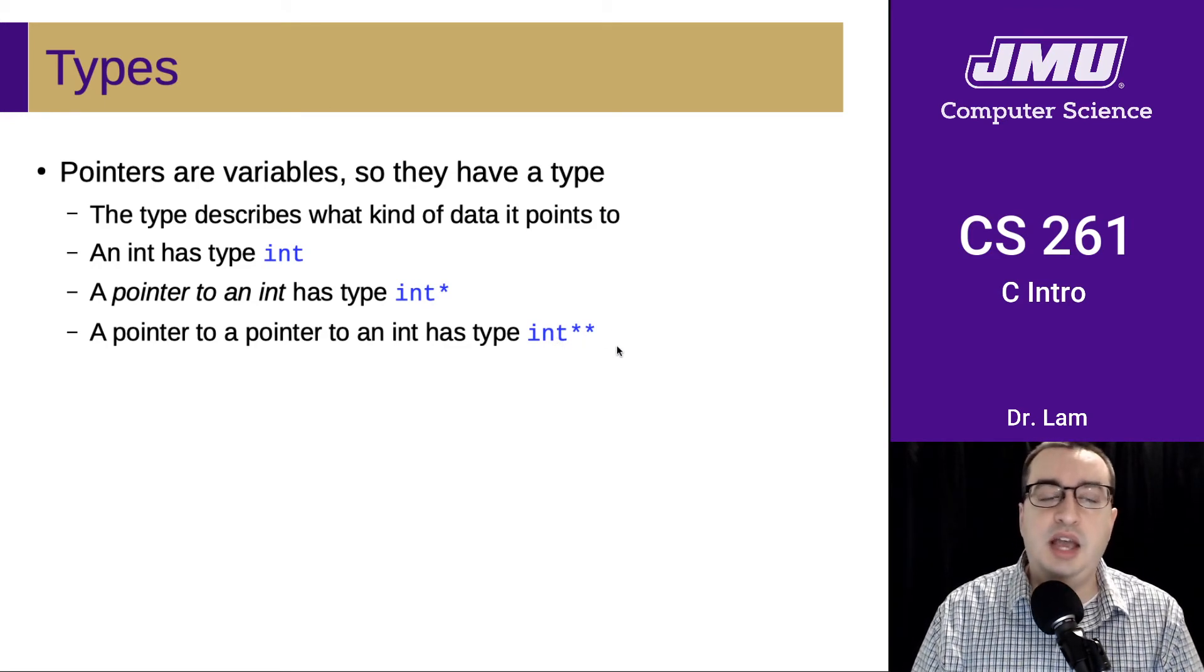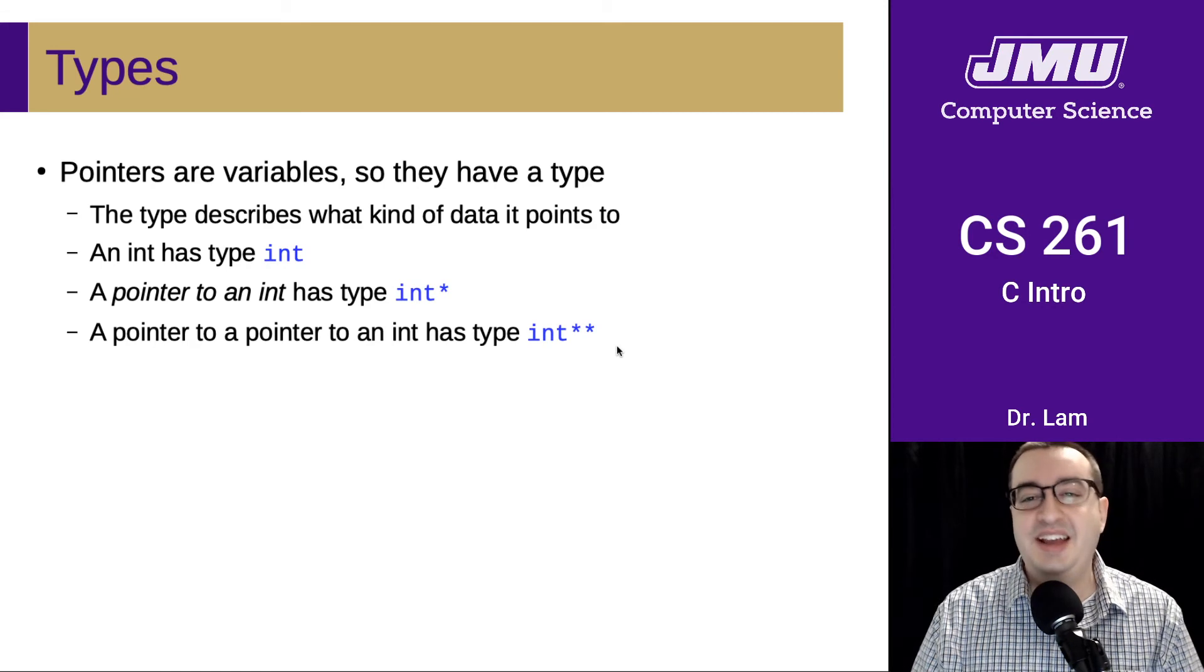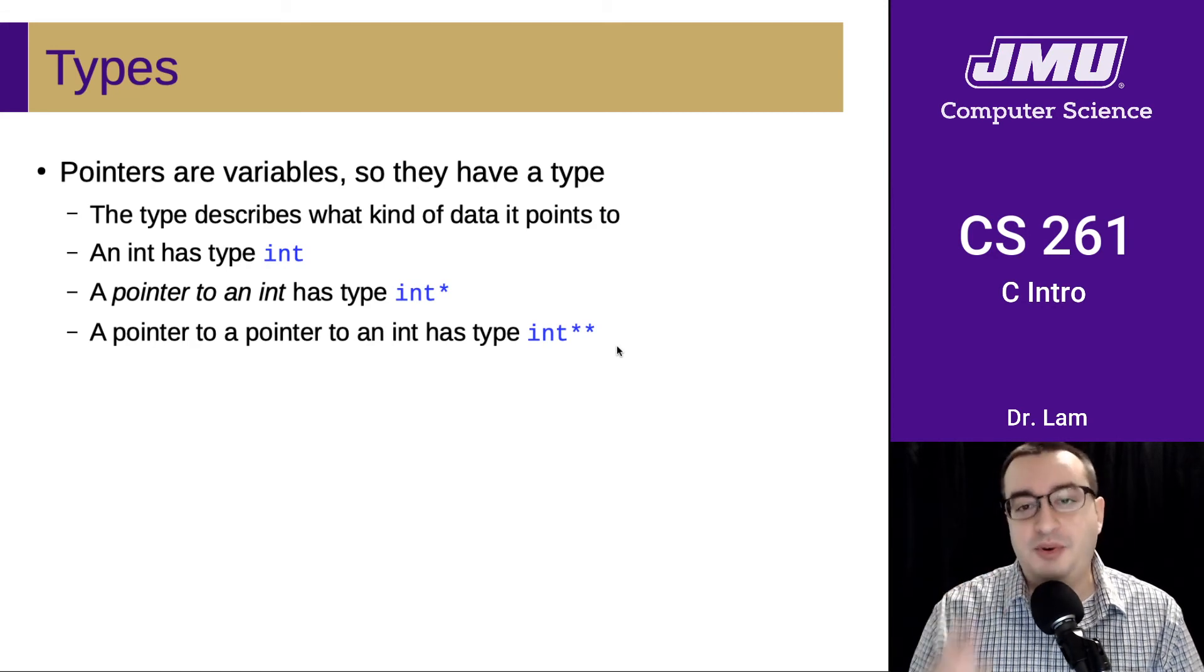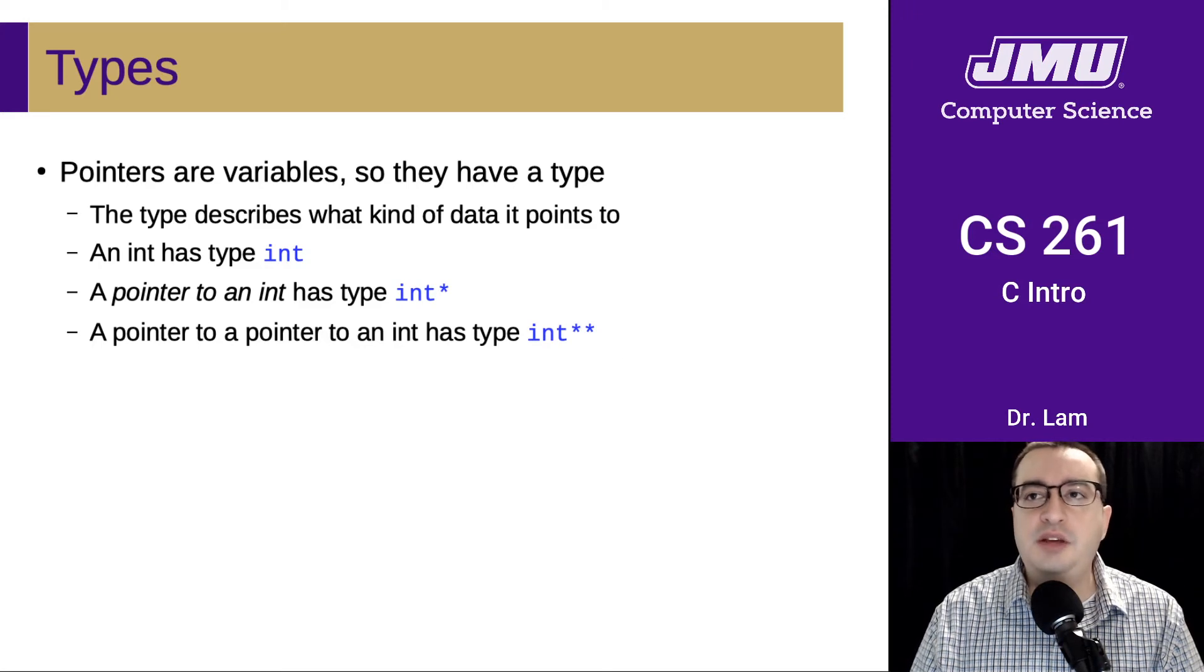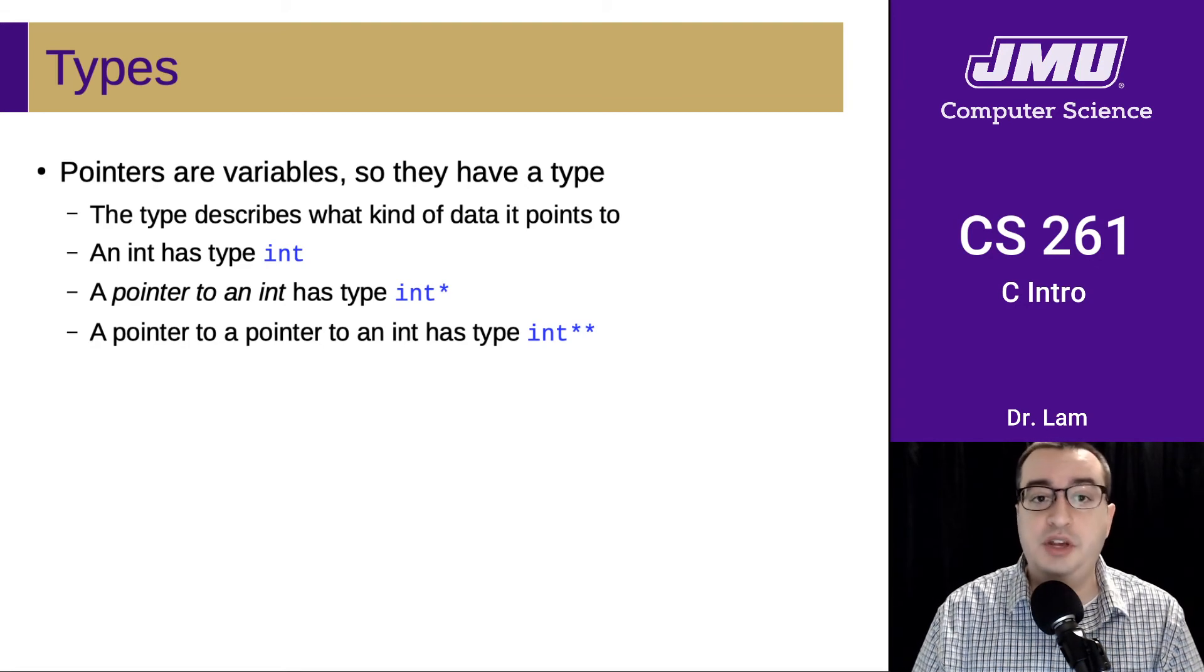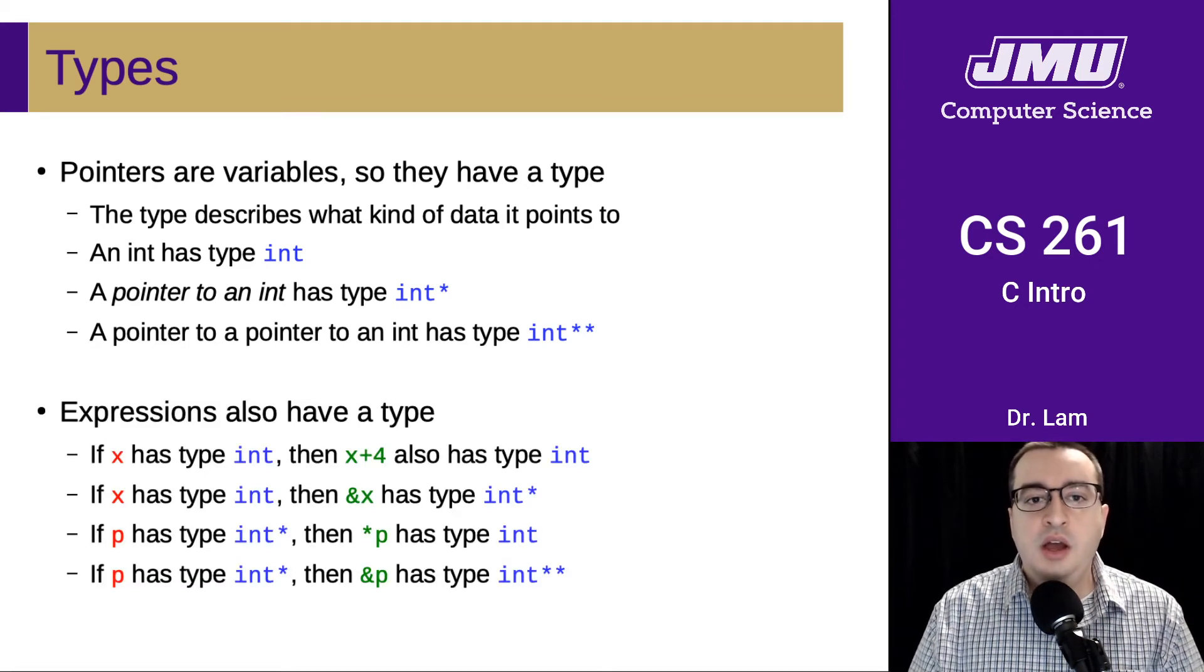And you may be wondering why in the world we would want to have a pointer to a pointer to an int at this point. And I will delay talking about that for now. But if you want kind of an intuition, think about what it would mean to have an array of integers and how that might work, or an array, a two-dimensional array of integers.